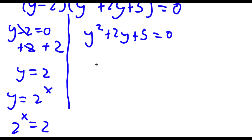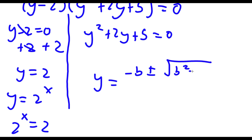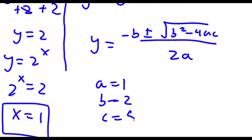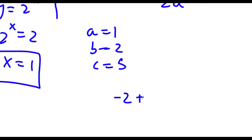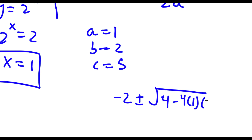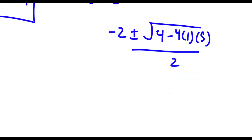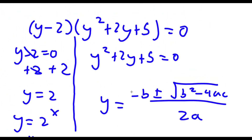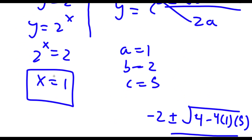For y squared plus 2y plus 5, I'm going to use the quadratic formula: negative b plus or minus the square root of b squared minus 4ac, all over 2a. In this case a is 1, b is 2, and c is 5. So I have negative 2 plus or minus the square root of 4 minus 4 times 1 times 5, all over 2. This equals negative 2 plus or minus the square root of 4 minus 20, and 4 minus 20 gives the square root of negative 16. Since you can't take the square root of a negative number, this equation yields no real solutions. So my only solution is x equals 1.